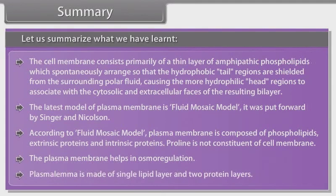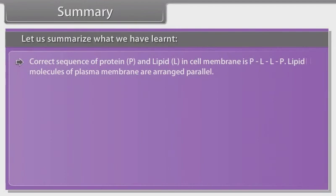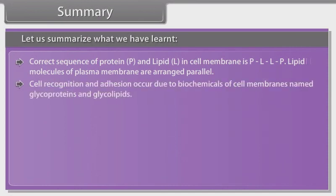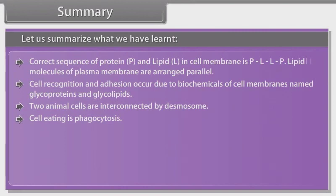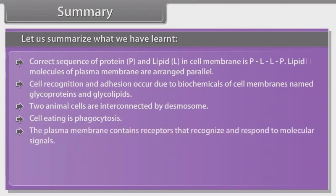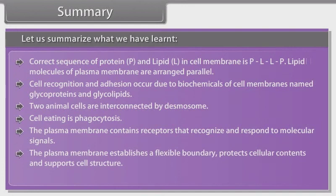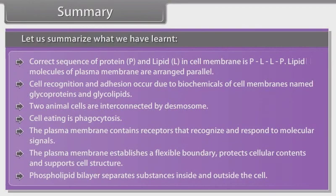According to the fluid mosaic model, plasma membrane is composed of phospholipids, extrinsic proteins and intrinsic proteins. Proline is not a constituent of cell membrane. The plasma membrane helps in osmoregulation. Plasmalemma is made of a single lipid layer and two protein layers. The correct sequence of protein (P) and lipid (L) in cell membrane is P-L-L-P. Lipid molecules of plasma membrane are arranged parallel. Cell recognition and adhesion occur due to glycoproteins and glycolipids. Two animal cells are interconnected by desmosome. Cell eating is phagocytosis. The plasma membrane contains receptors that recognize and respond to molecular signals. The phospholipid bilayer separates substances inside and outside the cell.